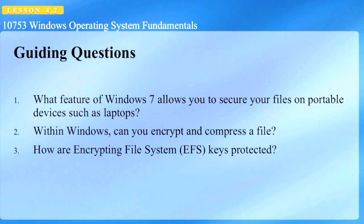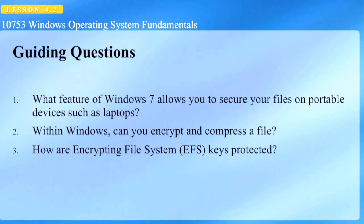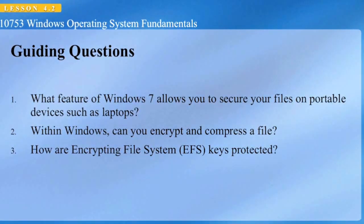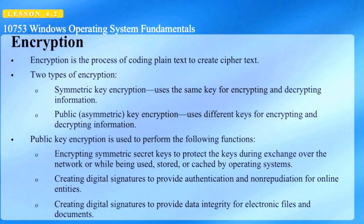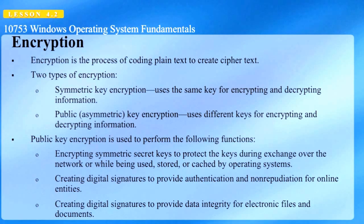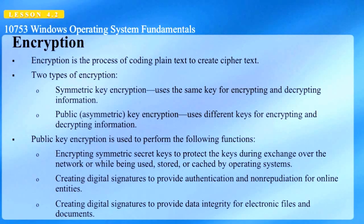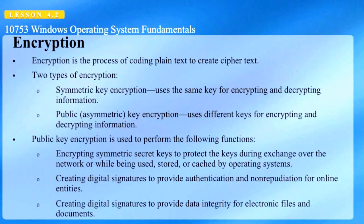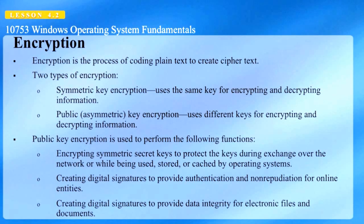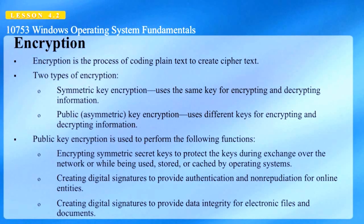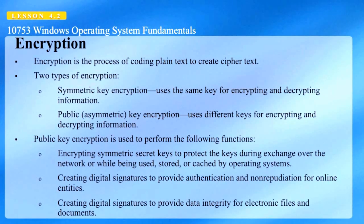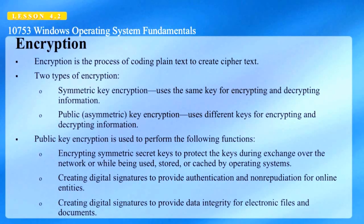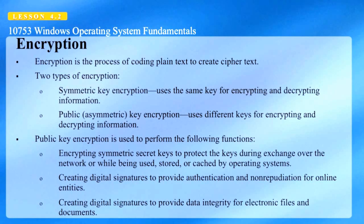How are encrypting file system keys protected? Encryption is the process of coding plain text to create ciphertext. Two types of encryption we're looking at: symmetric key encryption, which uses the same key for encrypting and decrypting the information, and public or asymmetric key encryption, which uses different keys for encrypting and decrypting the information.